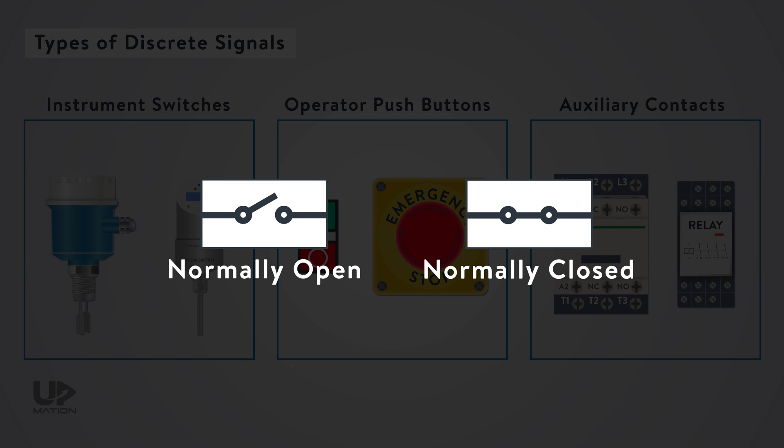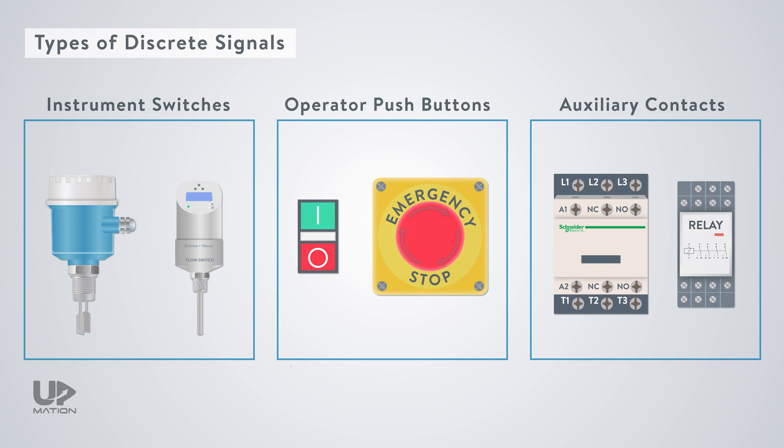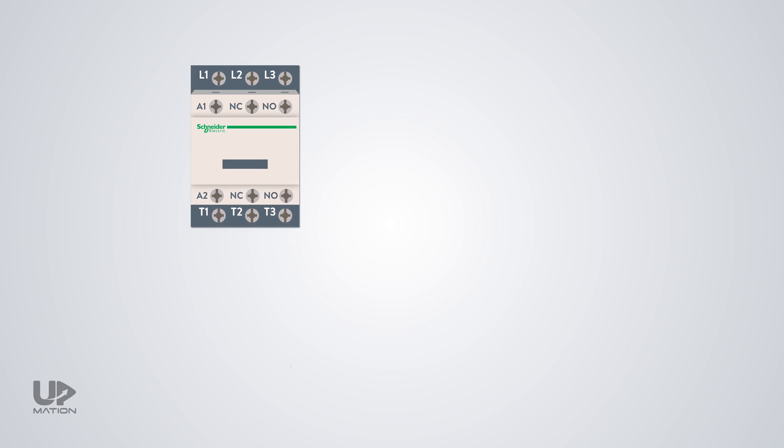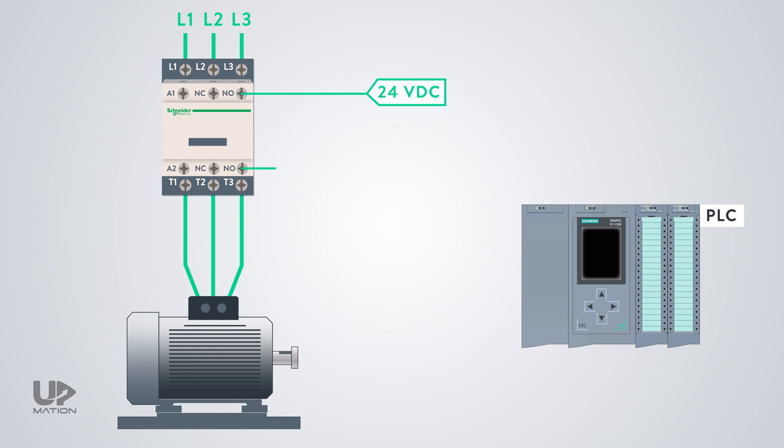The open and closed contacts can be integrated into any of these three equipment types. As an example, let's consider the auxiliary contacts of a contactor. These auxiliary contacts are used to send feedback to the PLC to make sure that the contactor is healthy and operational.